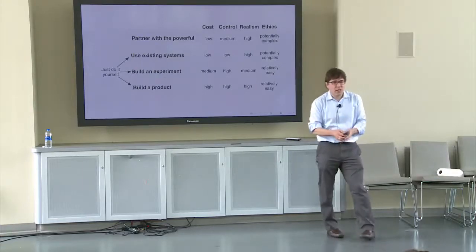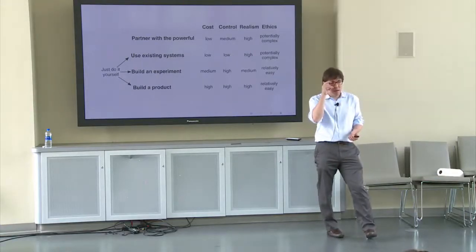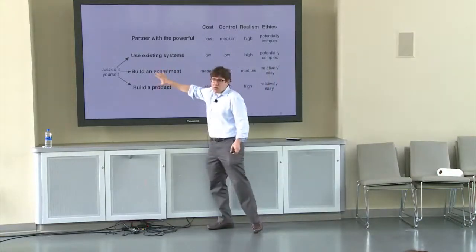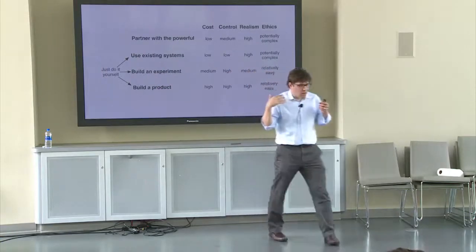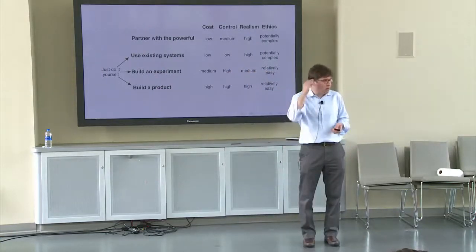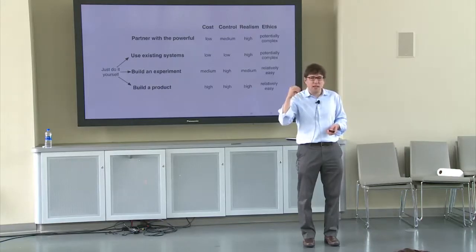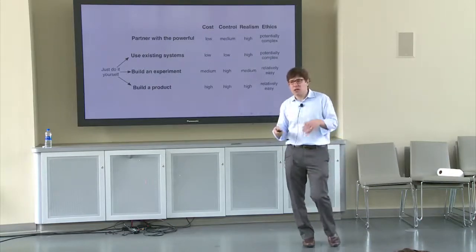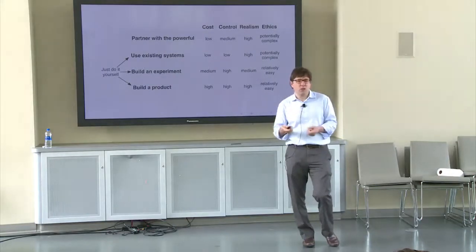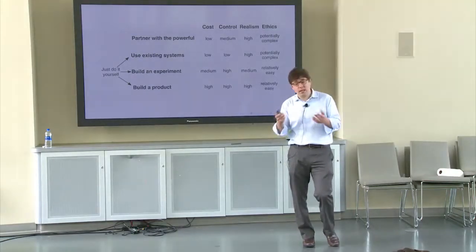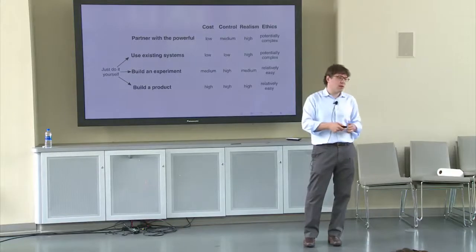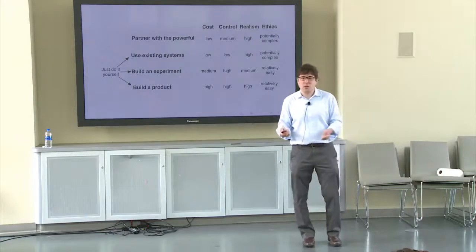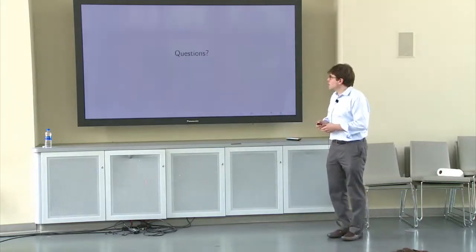So those are the four strategies that I see. None of them are perfect. But I really do want to emphasize these three strategies. That is, you don't just need to work with partners. You don't have to work with partners. You can do it yourself. And there are a lot of downsides that come from working with partners. And doing it yourself creates a lot of opportunities for more control. But you also give up stuff, like the scale that you get from working with partners and sometimes the realism. So there is a tradeoff. But both sides of this exist. You don't just have to work with partners.